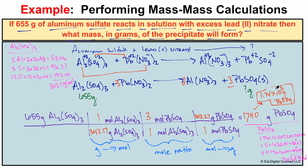So in this problem, if we have 655 grams of aluminum sulfate reacting in solution with excess lead two nitrate — excess meaning an unlimited amount that won't run out — then the precipitate, which we identified using the solubility table, is lead two sulfate, and 1740 grams of it will form. If you like what you see, click the subscribe button in the bottom right corner, and feel free to leave any comments or questions below.